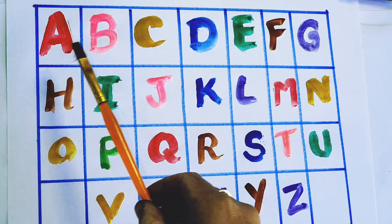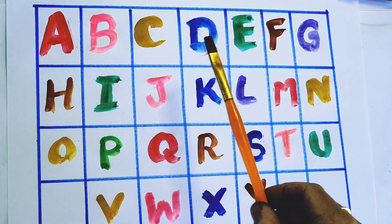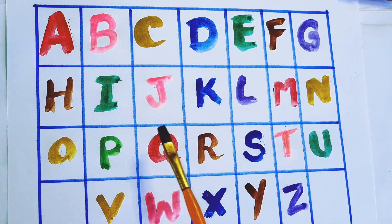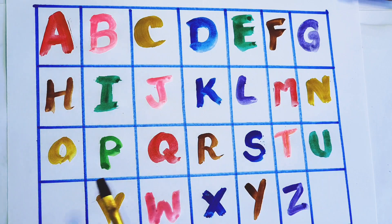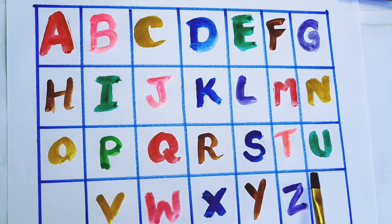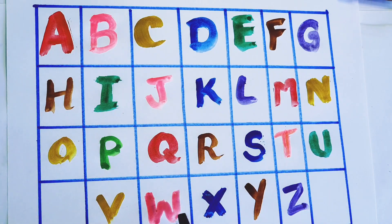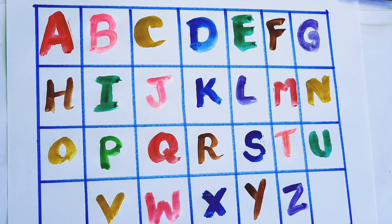So kids, what we learned today? A, B, C, D, E, F, G, H, I, J, K, L, M, N, O, P, Q, R, S, T, U, V, W, X, Y, N, Z. Now I know my A, B, C.